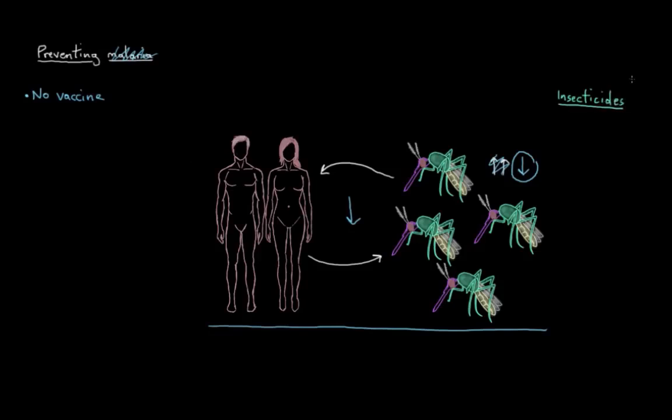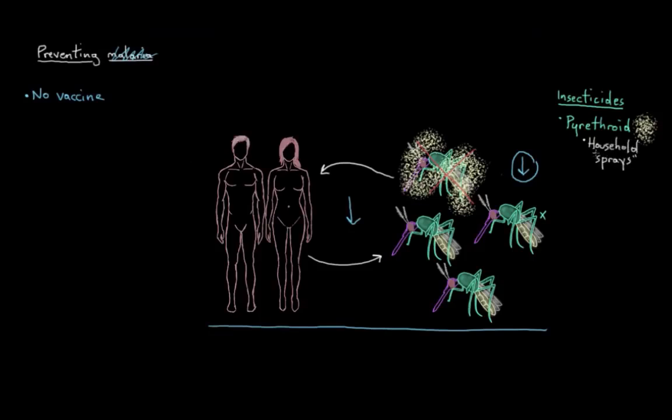Probably the most common insecticide chemical is called a pyrethroid. These work by being sprayed in the house or around your tent, and when mosquitoes come into contact with these pyrethroids, they get paralyzed and then they die. It's kind of barbaric, but that's the most common insecticide that we find in household insecticide sprays.